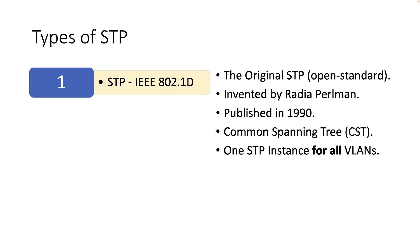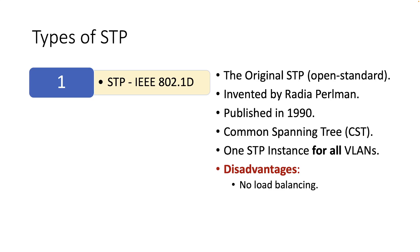Also known as Common Spanning Tree or CST, it creates one spanning tree instance with one elected root bridge for the whole bridge network regardless of the number of VLANs. And because there is only one root bridge, traffic for all VLANs flows over the same path, which is the best path to the root bridge, which can lead to suboptimal traffic flows.